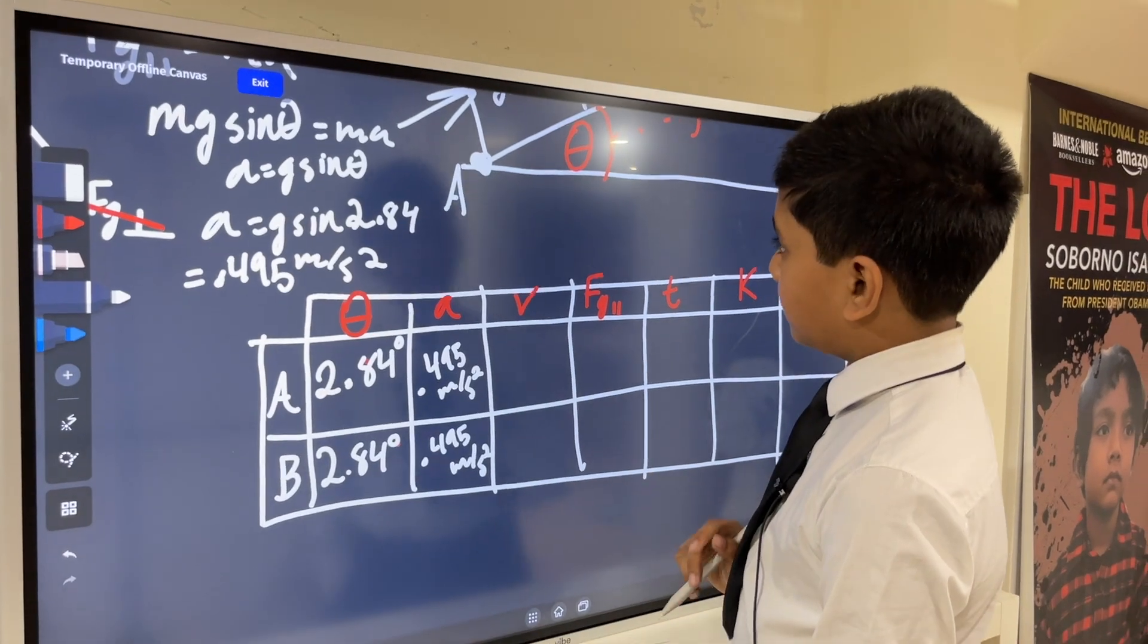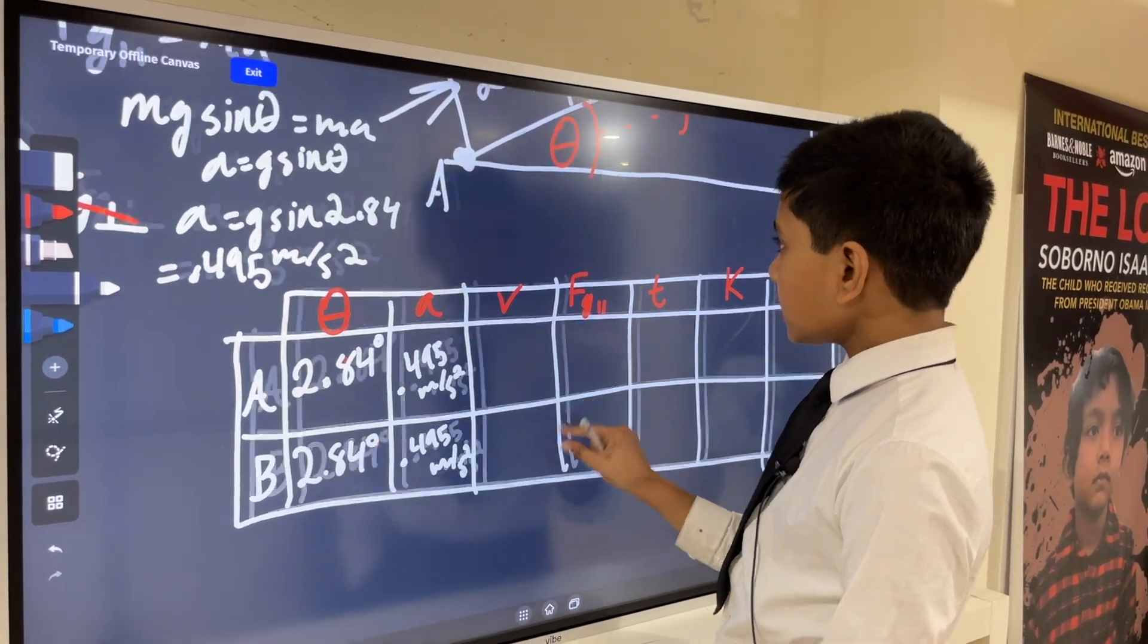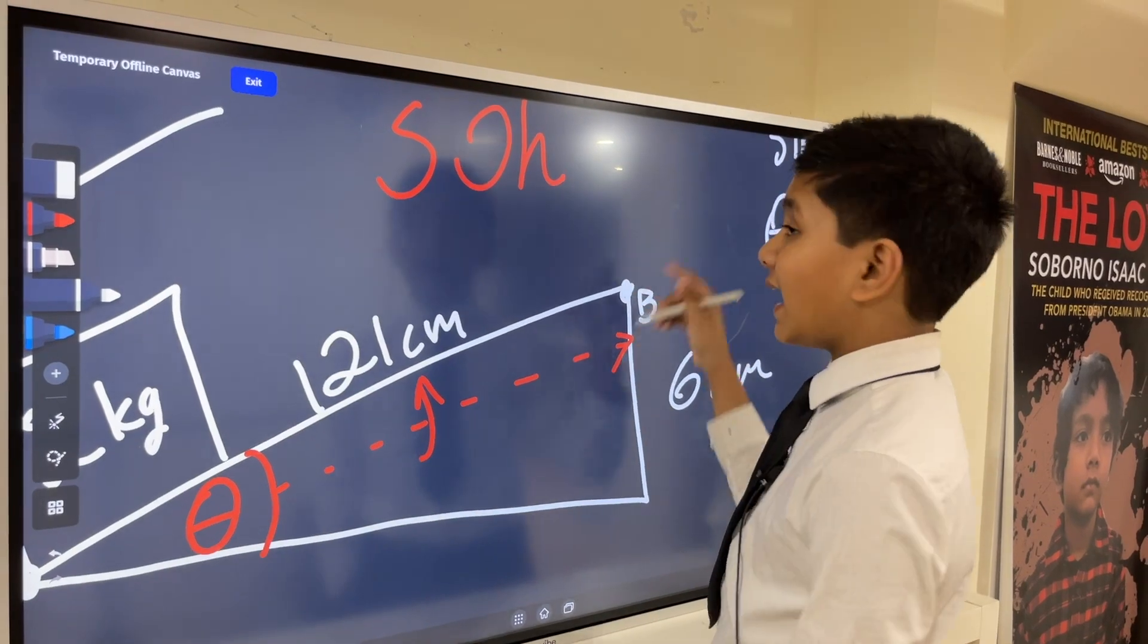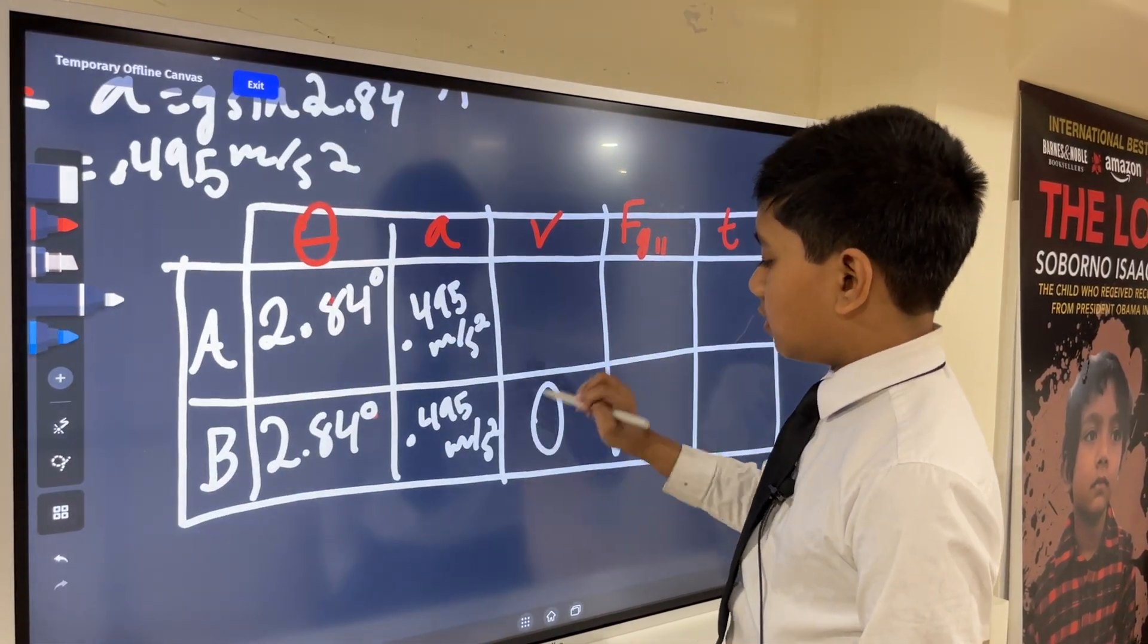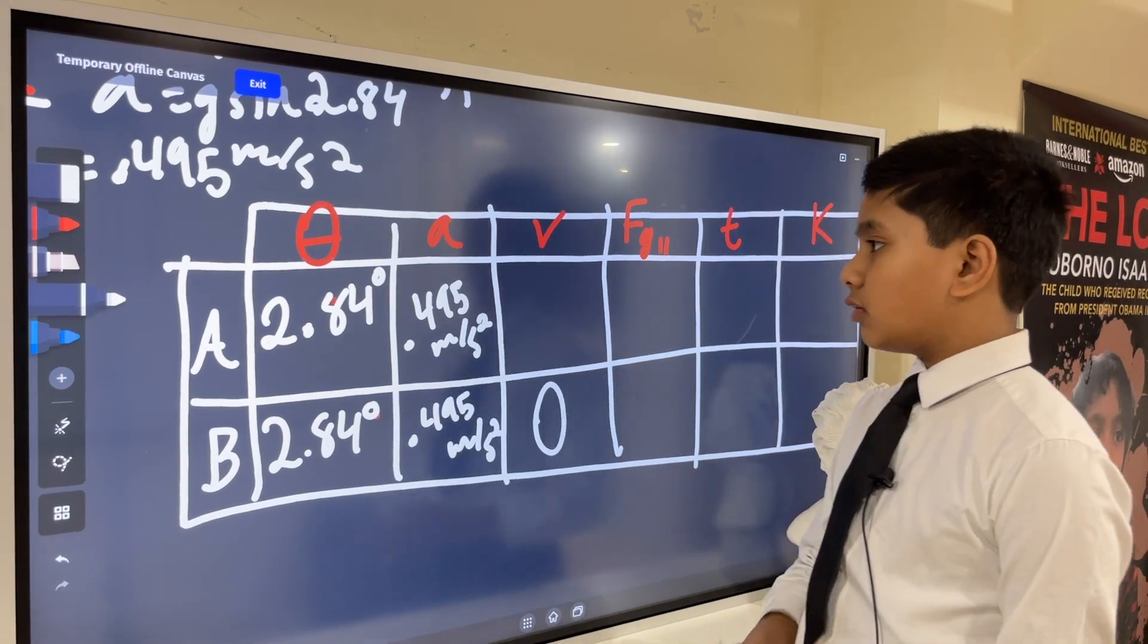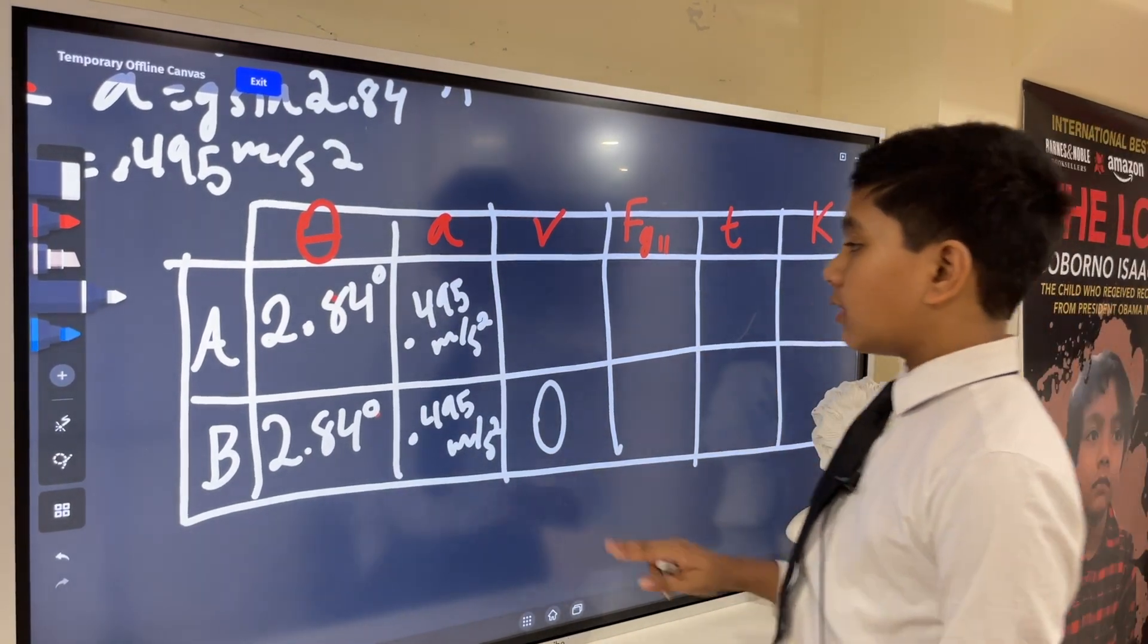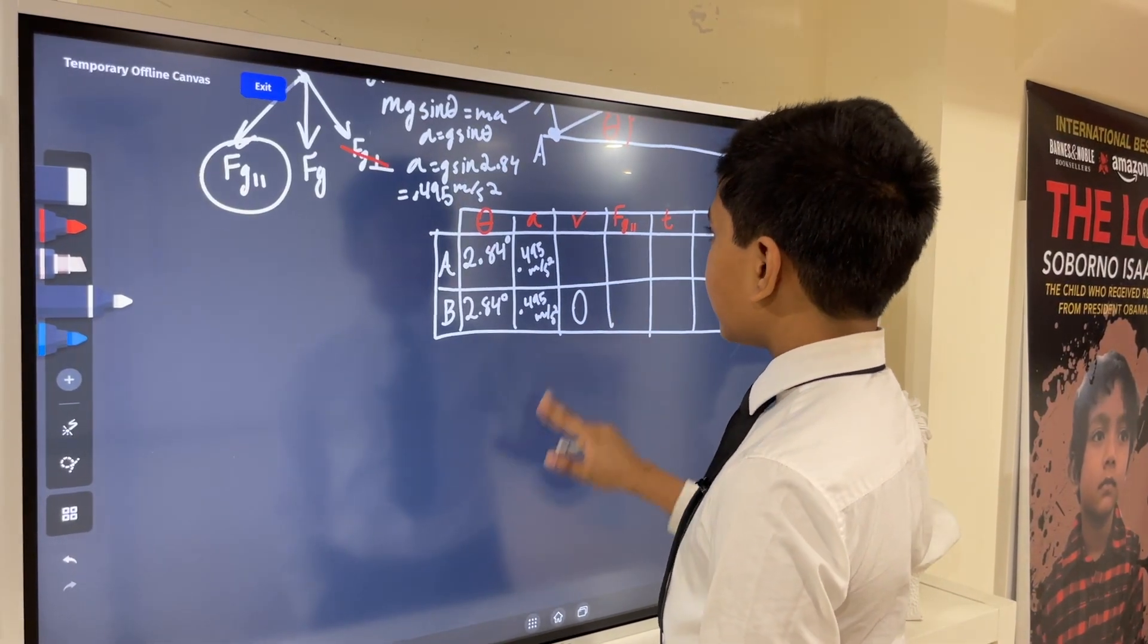What about velocity at both points? Well, at B, we know it has to be 0. But for A, what about A?